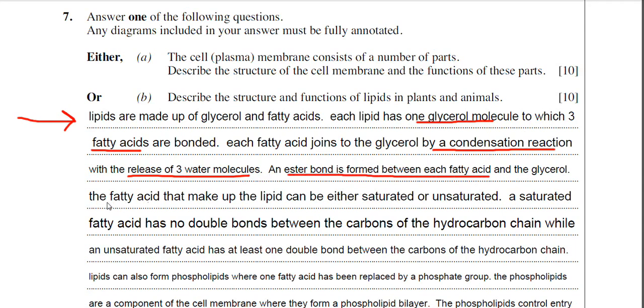Then I thought it was good to talk about the saturated and unsaturated fatty acids. I've said that a saturated fatty acid has no double bonds between the carbons of the hydrocarbon chain. That's important to remember - these double bonds or single bonds are formed between the carbons of the hydrocarbon chain. So an unsaturated fatty acid then has at least one double bond between the carbons of the hydrocarbon chain.